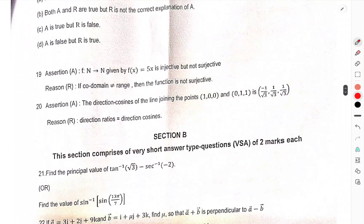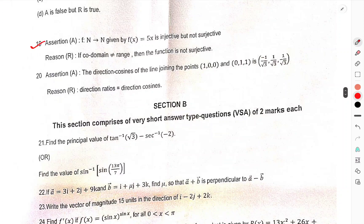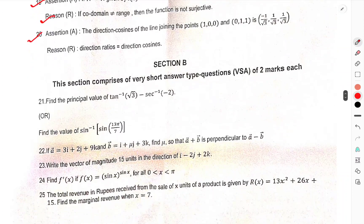A solution of region-based question. Question number 19, if A is this given by injective but not surjective. Reason, if codomain is not equal to range and the function is not surjective. Question number 20, the direction cosines of the line joining this, the direction ratio is equal to direction cosines.